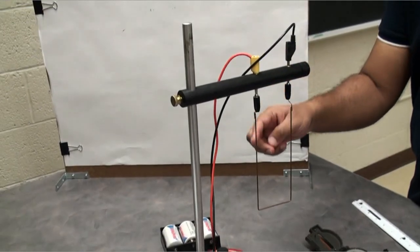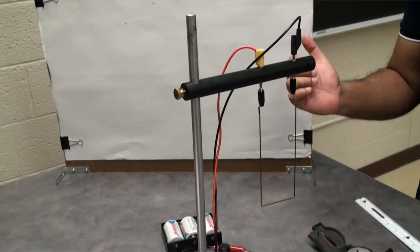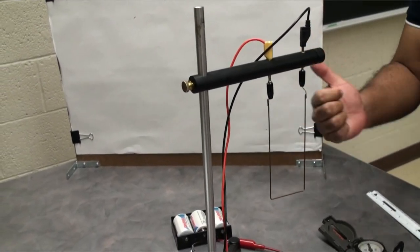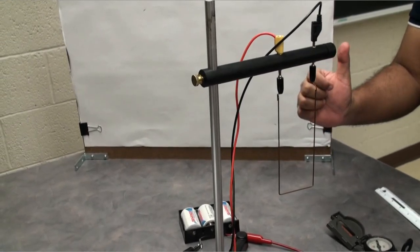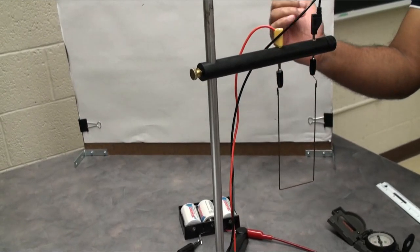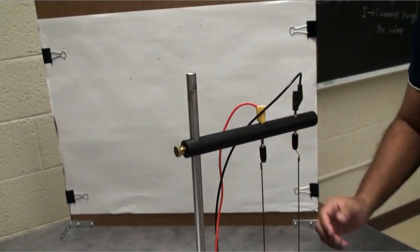So the direction of the magnetic field you can find using right-hand thumb rule. Which means you can point your thumb in the direction of the current and you can curl your fingers in the direction of magnetic field.